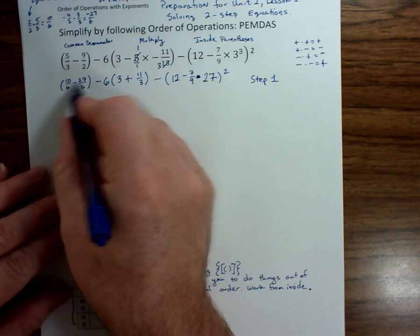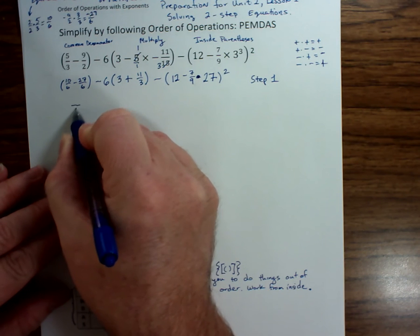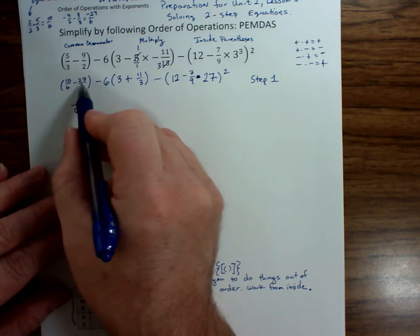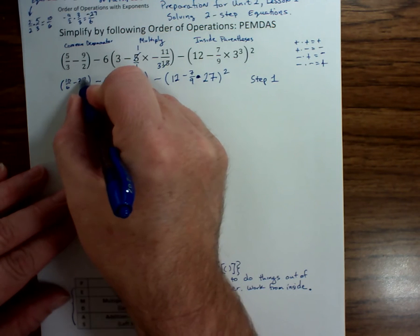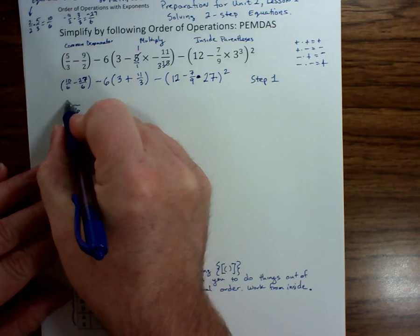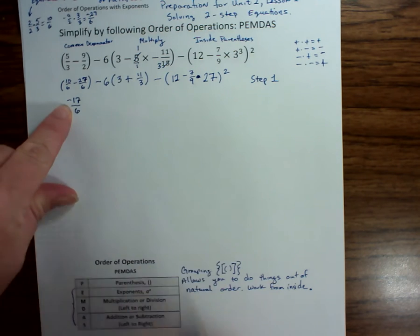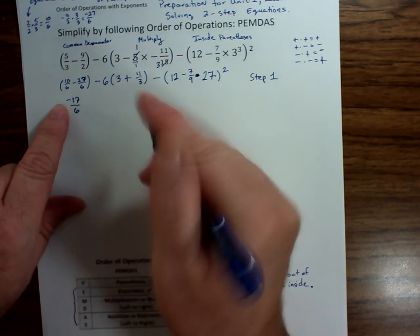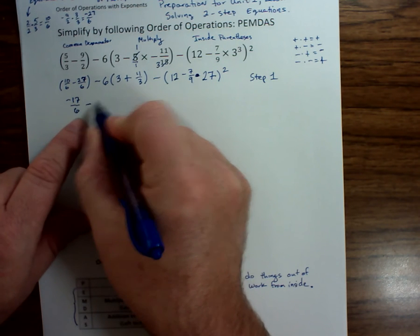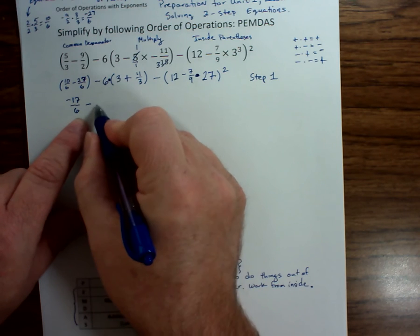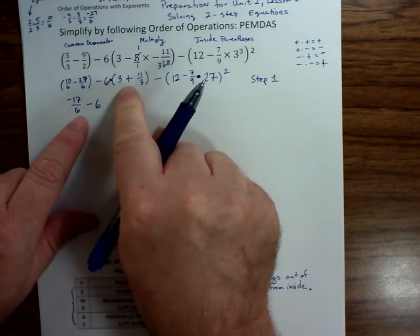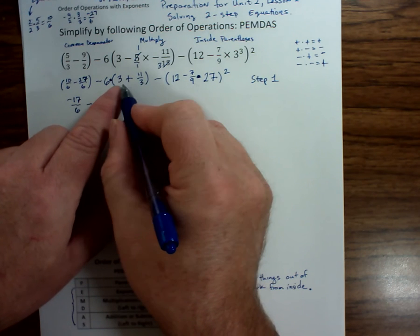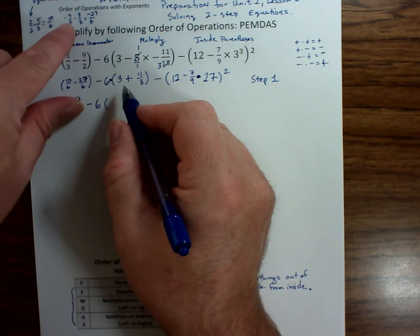Here we can combine. We have a common denominator of 6. And we can do 10 minus 27. Now you might be thinking, that's a difficult subtraction. It's not. Positive 10 minus 27, you end up with negative 17. So in math, you have to get the sign correctly. The sign is equally as important as the number. Here we have minus 6. And there's a times going on here. But we have to go inside again. And now we want to be able to add these together. So we need to be into thirds. We're kind of back up at this step. We've got to get to thirds.